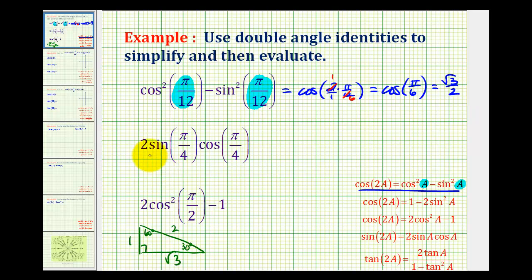For the second expression, we have two sine of pi over four times cosine pi over four, which fits this double angle identity for sine. Notice we have two sine A cosine A on the right side, which is equal to sine of two A. So A is equal to pi over four.